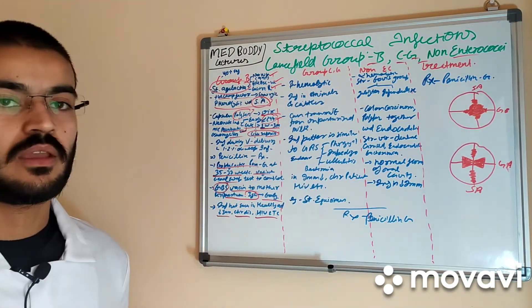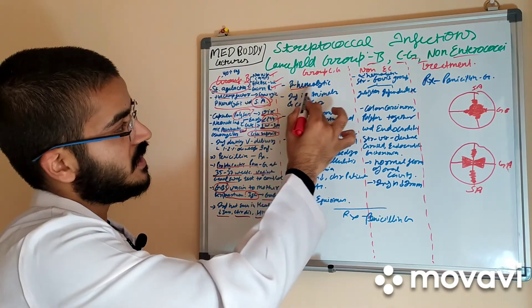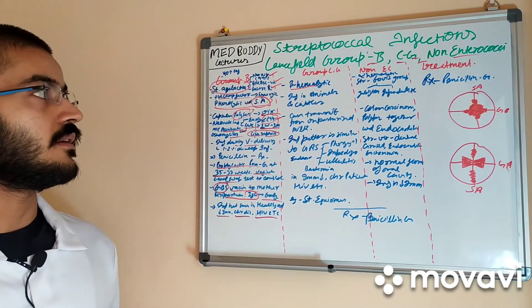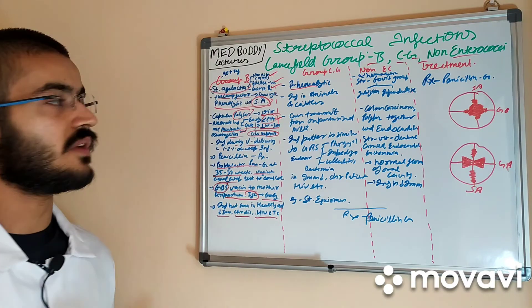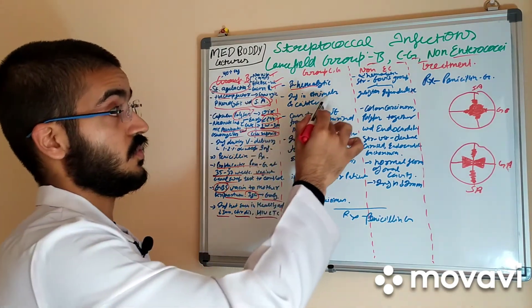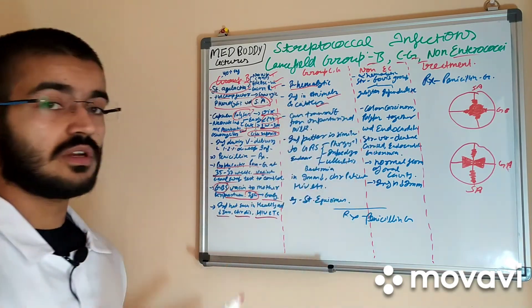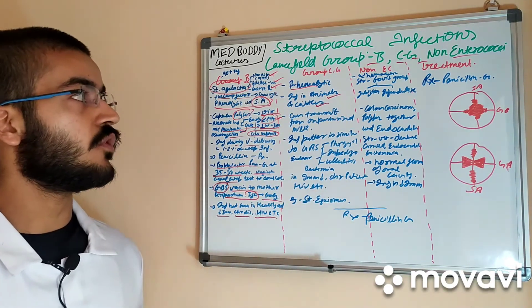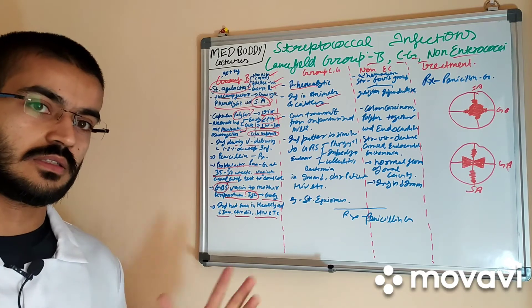Group C and G causes beta hemolysis and because of different pattern of hemolysis it has a different group. It generally causes infections, not infection but it has normal flora in animals and cattle such as horses.